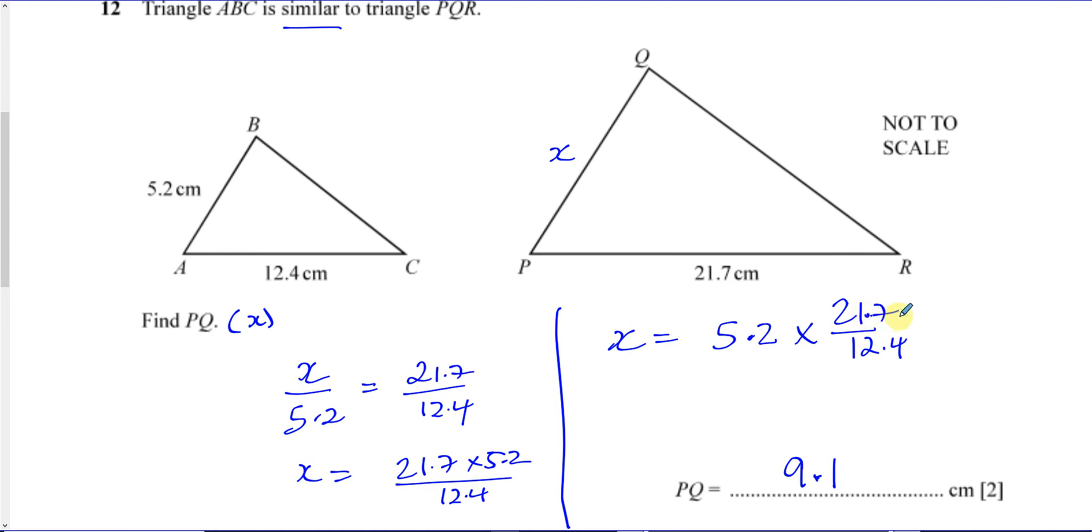21.7 divided by 12.4 will increase 5.2 in the correct ratio, and you get the answer 9.1.